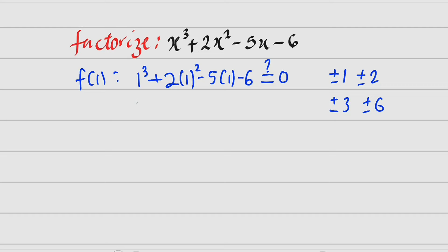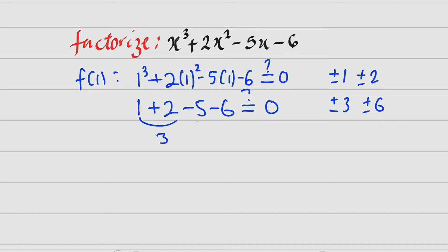Let us simplify. This is equal to 1 plus 2 minus 5 minus 6. Is this equal to 0? 1 and 2 is 3, and 3 minus 11 is negative 8. Negative 8 is not equal to 0, therefore 1 is not a root.